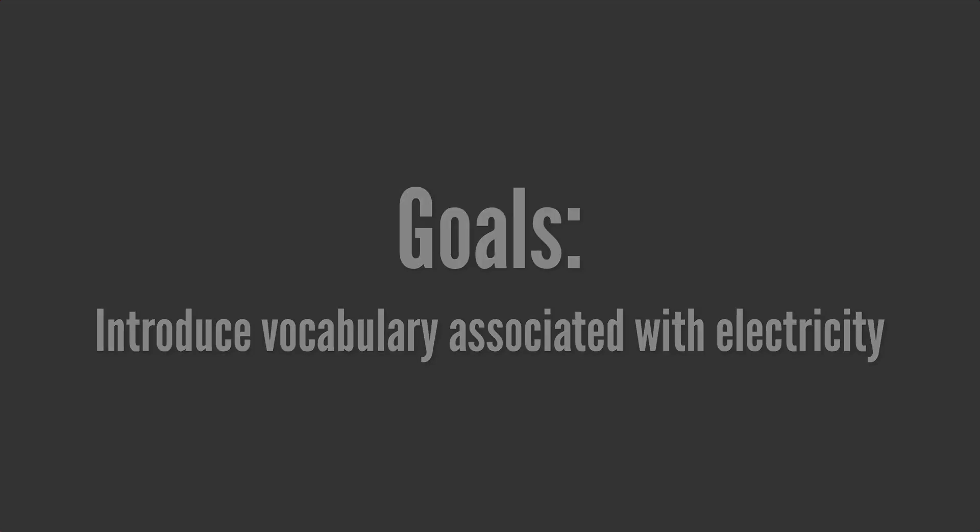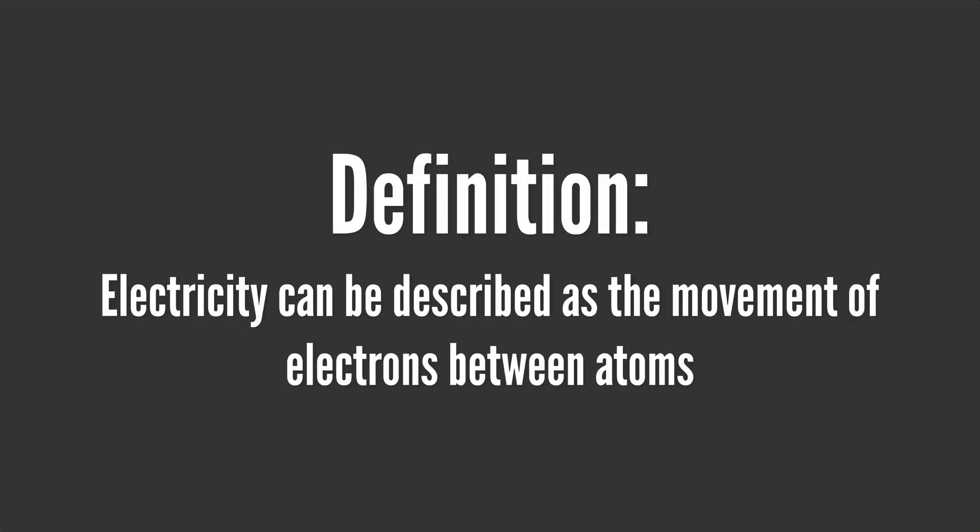Well let's start by defining electricity. Electricity can be described as the movement of electrons between atoms. Electrons are subatomic particles. Since electrons are subatomic particles, let's begin with discussing the structure of atoms.